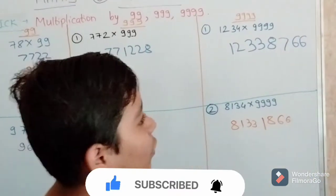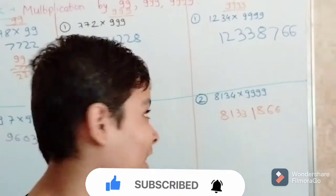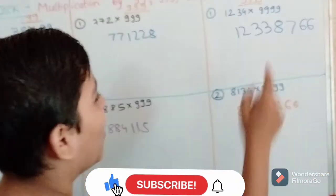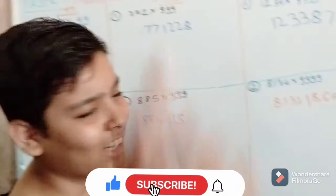1234. 1234 minus 1 is equal to 1233. And 9999 minus 1233 is equal to 8766. It's simple.